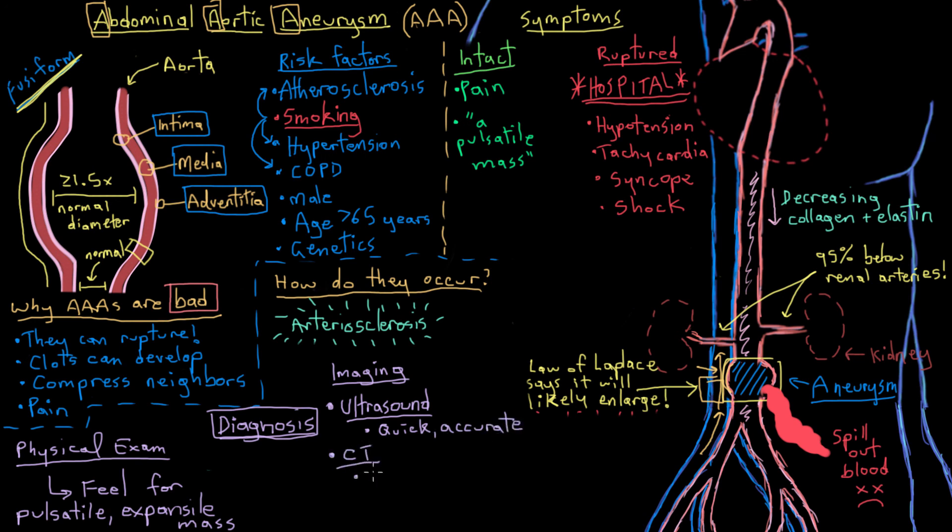CT, or computed tomography scans, are used to diagnose AAAs to check exactly where a given one might be and to see what its diameter is, because that'll help to determine what sort of treatment it gets.